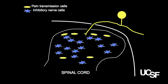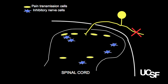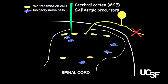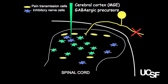Here's the experimental design. We have primary afferents, we have inhibitory interneurons, and after injury there is a loss of the inhibitory control. We ask the question: could we take inhibitory interneurons from the embryonic cortex and transplant them into the spinal cord to replace the missing inhibition, and thereby treat the disease of neuropathic pain?